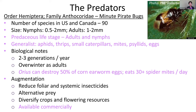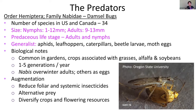Damsel bugs are another predaceous group with a piercing sucking mouthpart — basically sucking the inside of prey out. We have about 34 species of these insects in North America. They are predaceous as both adults and immature stages, feeding on insects like aphids, leafhoppers, caterpillars, and moth eggs.